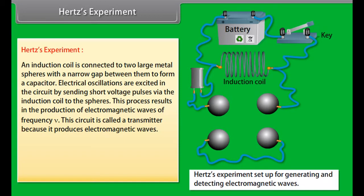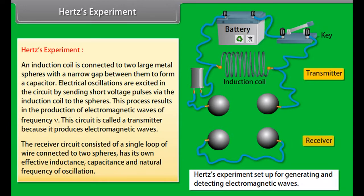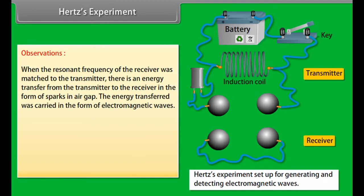Hertz experiment. An induction coil is connected to two large metal spheres with a narrow gap between them to form a capacitor. Electrical oscillations are excited in the circuit by sending short voltage pulses via the induction coil to the spheres, charging one sphere positive and the other negative. In this ionized state the electrons and ions in the air gap oscillate back and forth with the same frequency nu as that of the circuit. This process results in the production of electromagnetic waves of frequency nu. This circuit is called a transmitter because it produces electromagnetic waves. The receiver circuit consisted of a single loop of wire connected to two spheres has its own effective inductance, capacitance and natural frequency of oscillation.